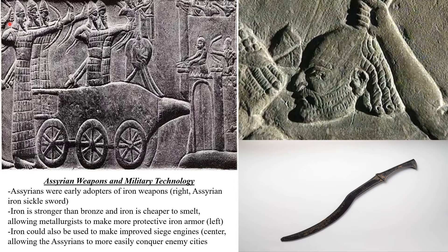As seen here on this slide, the Assyrian soldiers are wearing scale armor that extends from their neck all the way down to their feet. Iron could also be used to make stronger siege engines, like this battering ram shown here, which would have allowed the Assyrians to more easily defeat cities that they besieged.